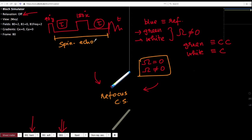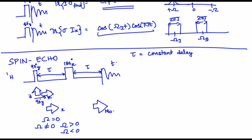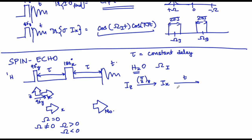We will see the same thing operating when it comes to the algebra. Let us take the example of water, which makes our life very easy because you have only one proton that is going to give you an NMR signal. Let us say it has an offset from the carrier frequency of capital Ωᵢ. So you start with the Iz magnetization, apply a π/2 y pulse to go along Ix, and then you have a τ delay where the chemical shift Hamiltonian Ωᵢ Iz operates.